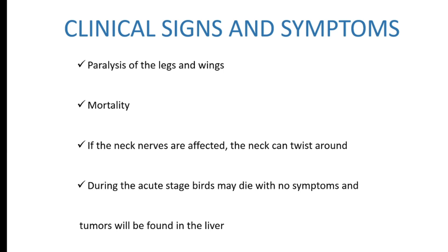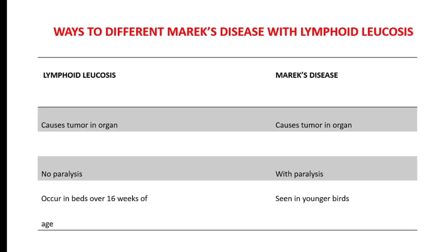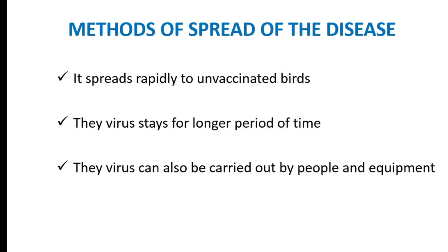Now, ways to differentiate Marek's disease from lymphoid leukosis — because sometimes they share some common features. Lymphoid leukosis also causes tumors in organs, just as Marek's disease does, but it differs because it does not cause paralysis. Secondly, lymphoid leukosis usually occurs in birds over 16 weeks of age, whereas Marek's disease is seen in younger chickens.